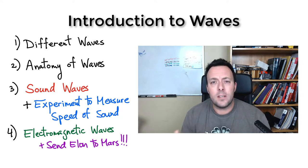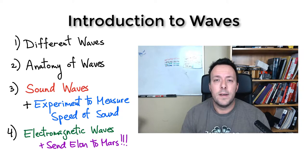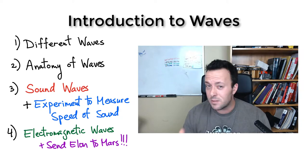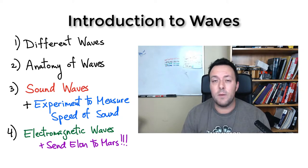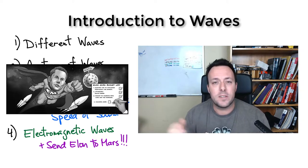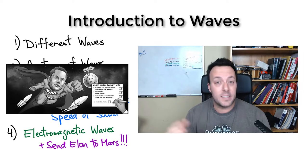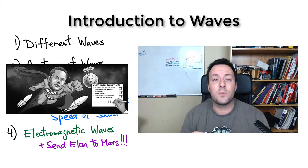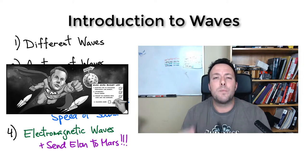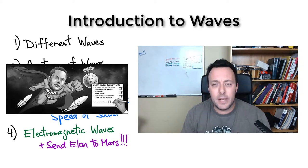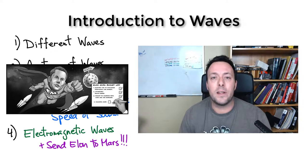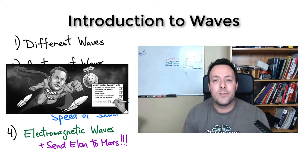We'll then talk about electromagnetic waves. Elon Musk recently said he has a 70% chance he wants to go to Mars within his lifetime. So we're going to speed things up a little bit — I'm going to put him on Mars and we'll play around with electromagnetic waves.